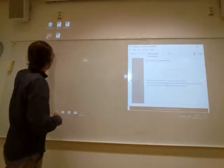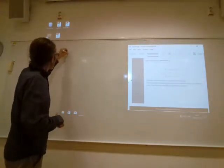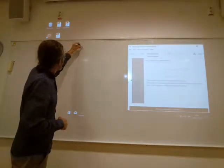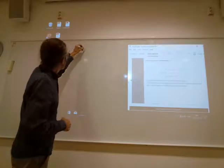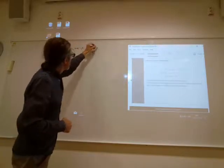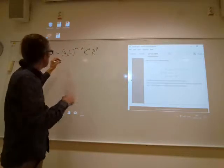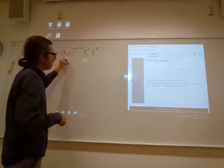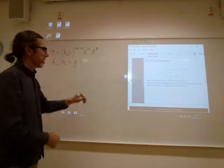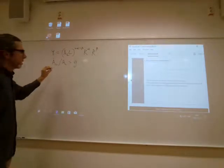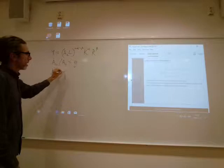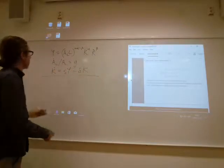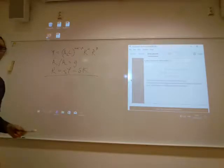Y is AL to 1 minus alpha minus beta, K to the alpha, R to the beta. AL dot over AL is G, or G_AL if you like, I'm just going to call it G. K dot is SY minus delta K. So those are all the equations you've got.